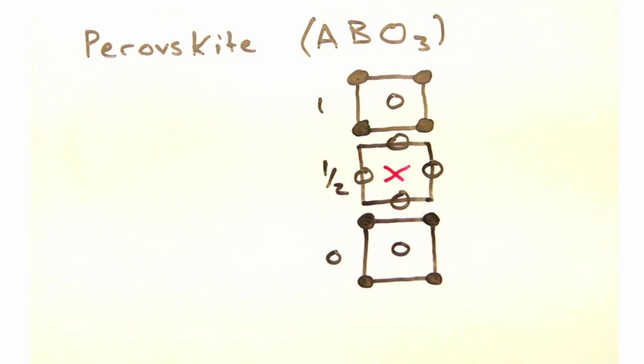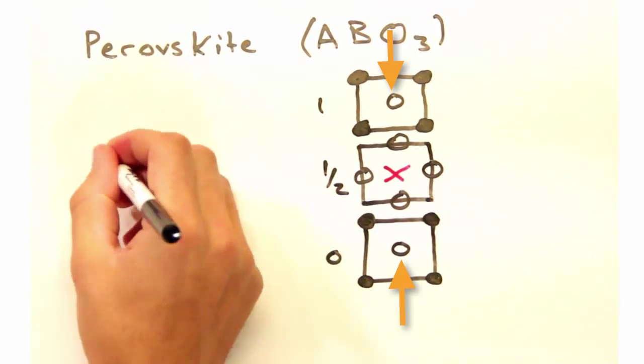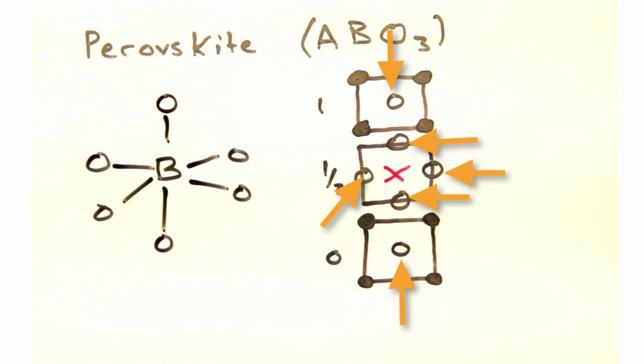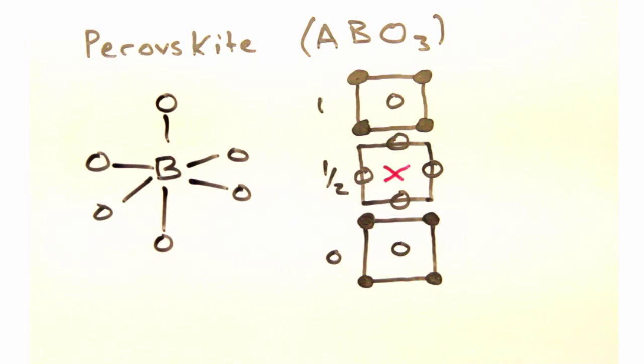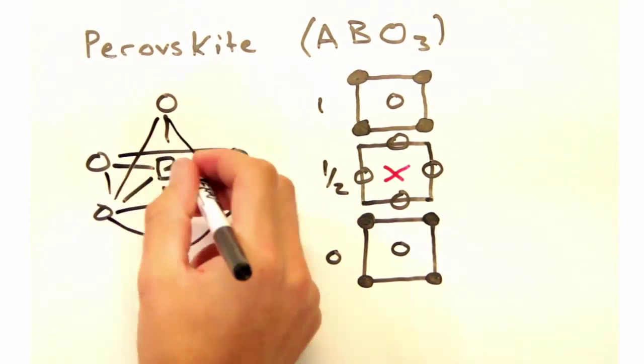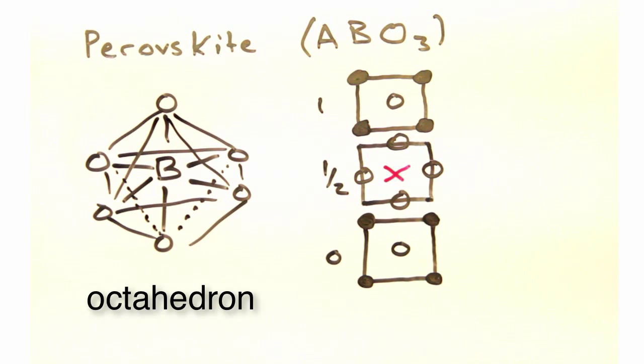Yeah, I think I see them. There's one oxygen atom in the slice above, one below, and four in the same plane. Now, imagining I connect the oxygen atoms above and below to the ones in plane, I can see they form an octahedra, with the B atom sitting smack dab in the middle.